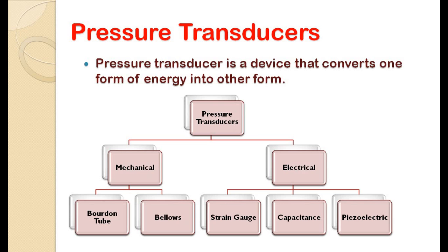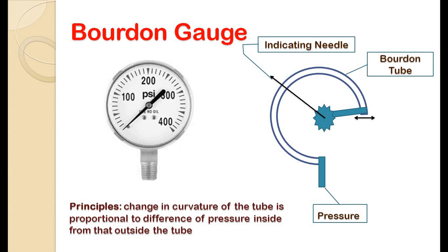Let's see how the Bourdon tube gauge works. The Bourdon tube is a mechanical pressure measuring instrument and thus operates without any electrical power. Bourdon tubes are radially formed tubes with an oval cross-section. The pressure of the measuring medium acts on the inside of the tube and produces a motion in the non-clamped end. This motion is the measure of pressure and is indicated by the movement of a needle.